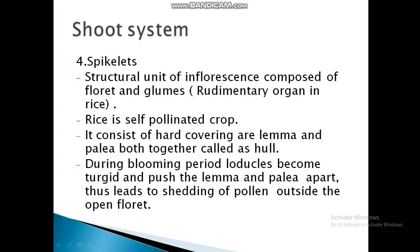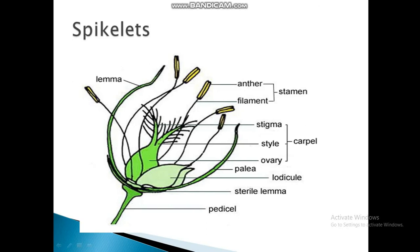The spikelet is the structural unit of the inflorescence, composed of a floret and rudimentary glumes. Rice is a self-pollinated crop. The spikelet consists of a hard covering called the lemma and palea, which together are called the hull. During the blooming period, the lodicule swells and pushes the lemma and palea apart, leading to shedding of pollen outside the open floret. Inside the floret, there is a stigma, style, ovary, carpel, and filament.